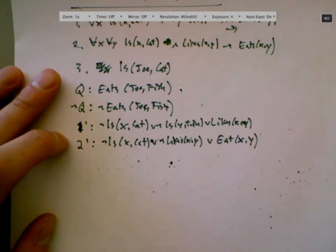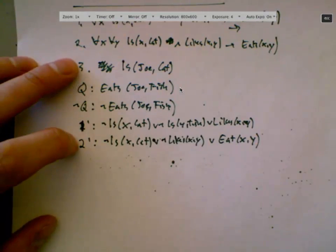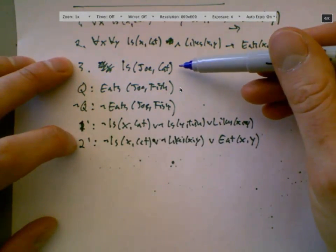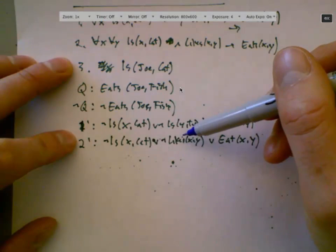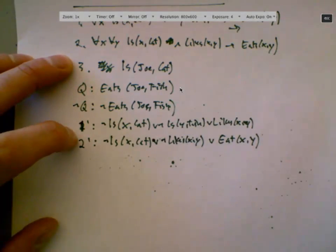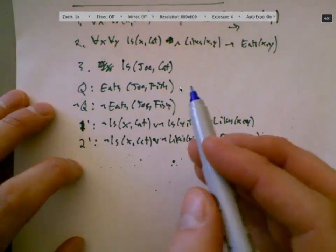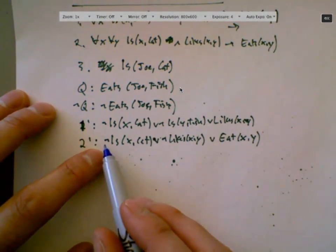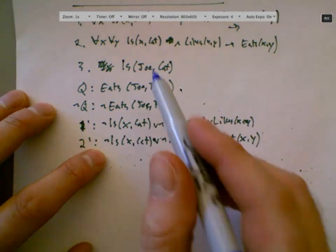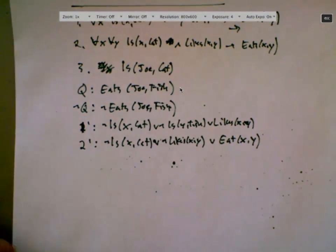Okay. So when we take, we're going to take three, and we're going to take two, and if we squint, we can resolve. We have to squint our eyes a little bit because here we've got a negated is, and here we've got a positive is. So like matter meeting antimatter, just like we talked about last time with resolution, we should be able to resolve, but they're not exactly the same. We've got an x here, and we've got a joe there.